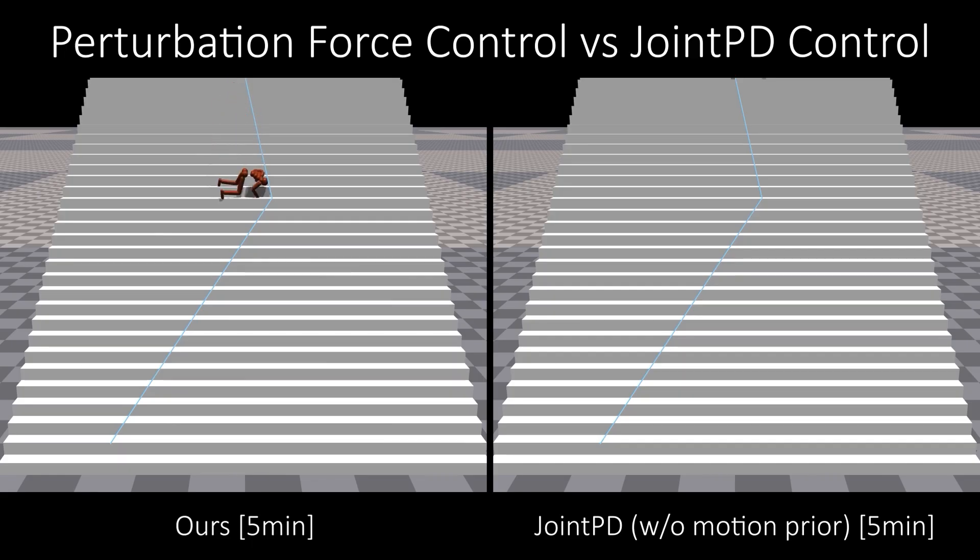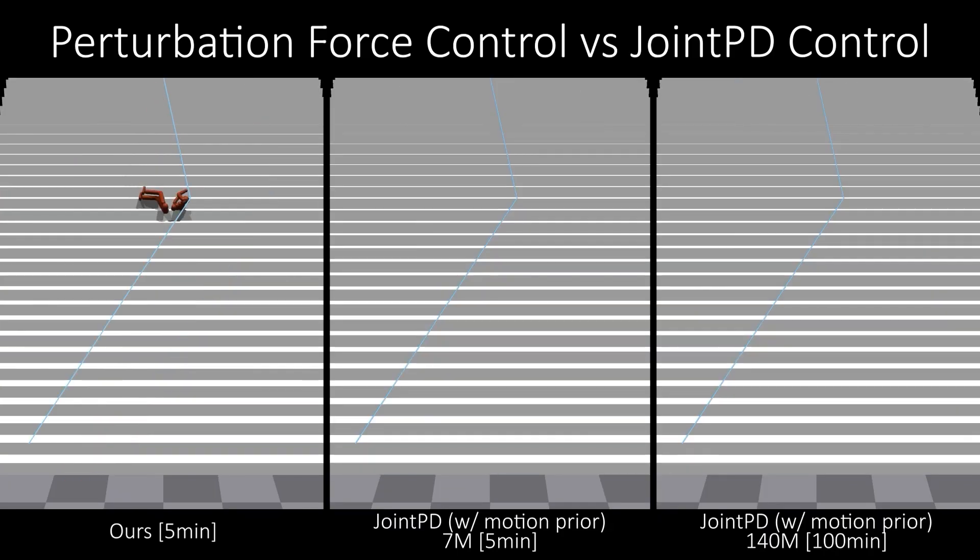Our system generates stunt scenes more efficiently and naturally by using perturbation force control, compared to Joint PD methods, which only generate actions for a PD target pose. Both our system and Joint PD without motion prior complete the given trajectory in under five minutes. However, Joint PD without motion prior struggles to produce natural motion because it cannot infer the correct poses. On the other hand, our system generates appropriate motion in just five minutes.